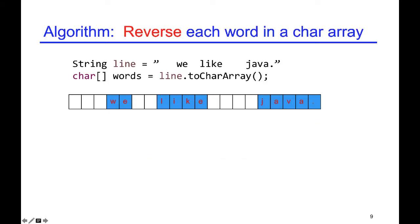This algorithm has following four steps. One, skip spaces and find the beginning of a word. That is, we skip the first three spaces and stop at W, the first letter of the word.